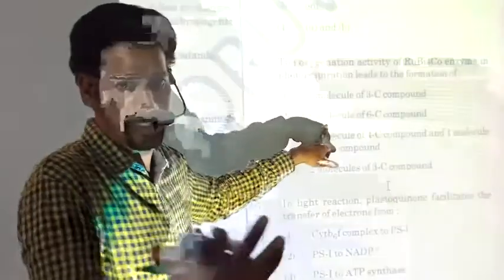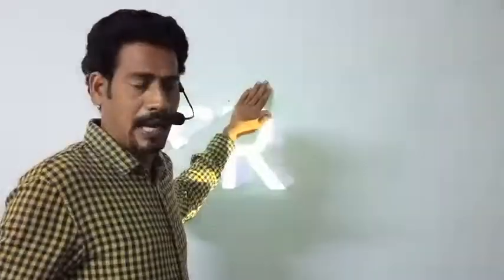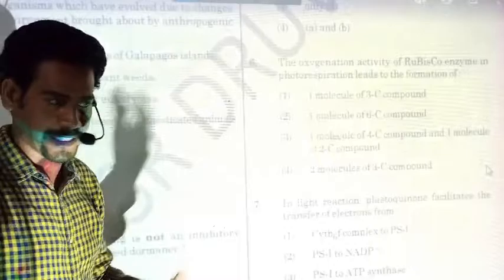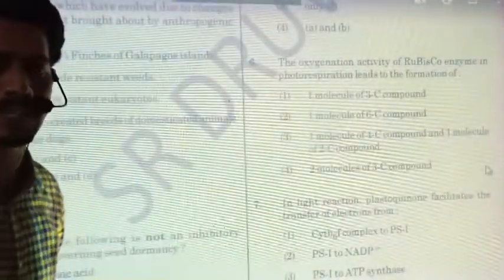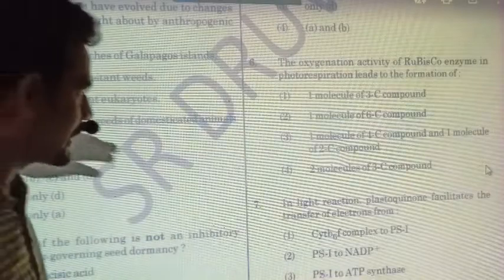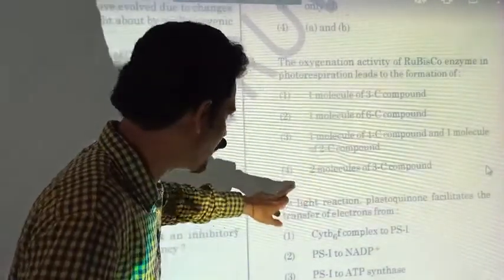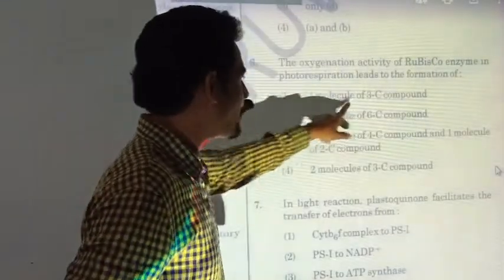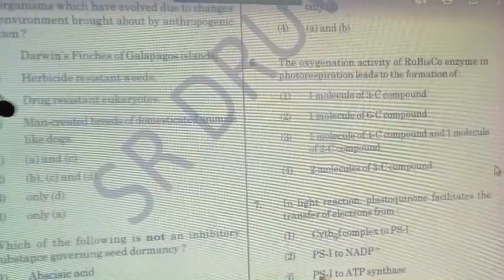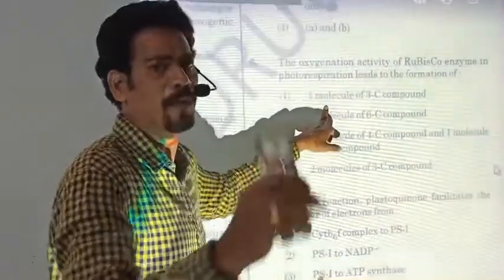Only one molecule of a three-carbon compound is given. A six-carbon compound is not possible during the C3 cycle. The five-carbon sugar RuBP reacts with carbon dioxide to produce two three-carbon molecules. Six-carbon direct formation is only seen in the Krebs cycle. When RuBisCO involves in oxygenation activity, one molecule of three-carbon compound — phosphoglyceric acid (PGA) — and two molecules of phosphoglycolate form. So the answer is the first option for question six.